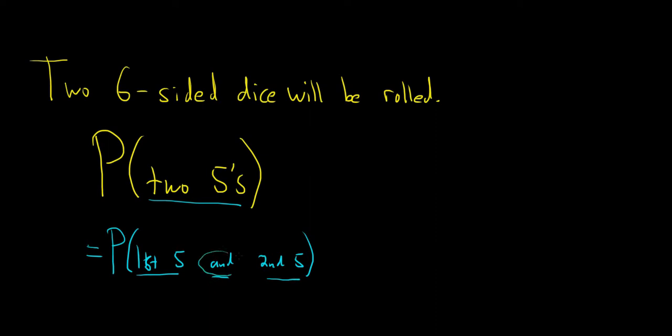And whenever you have an 'and' in a probability question, you multiply. So first we're going to figure out the probability that the first one is a five.